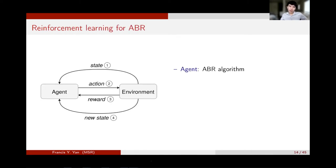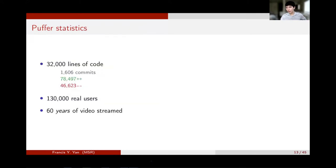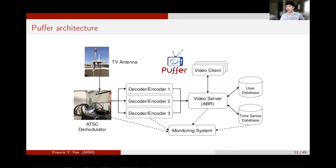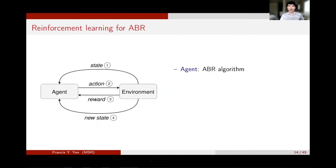So we wrote more than 30,000 lines of code for Puffer and have used it to stream 60 years of video to 130,000 real users. We're also publishing anonymized data every day and opening Puffer to the research community to train and test ABR algorithms. Any questions about the platform itself?